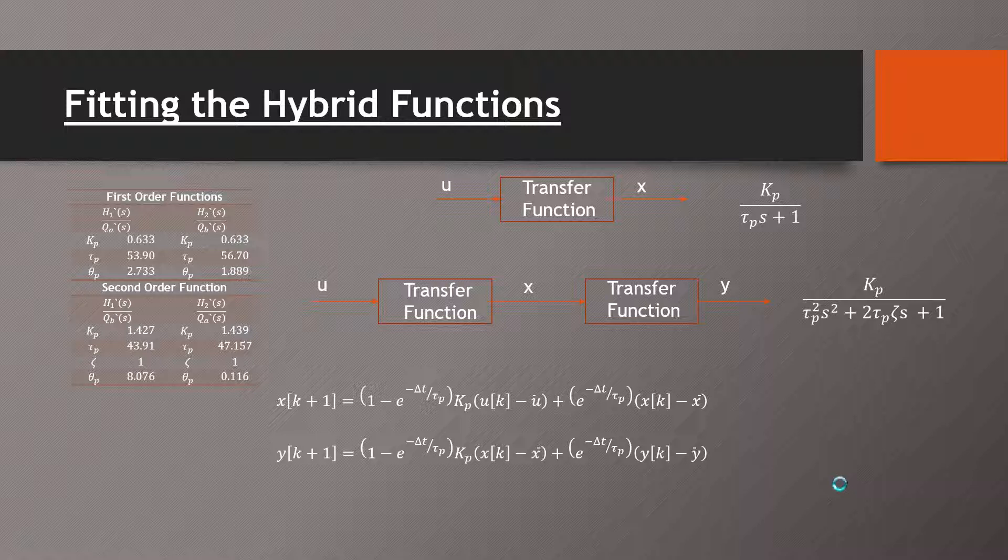For our second order functions, it is the equivalent of running our input u through a transfer function to output a height x, and that would be a top tank. And then that becomes an input to a height y after going through a second transfer function. So our second order transfer function is the equivalent of two first order transfer functions, and we fit two models to arrive at our parameters for our second order function.